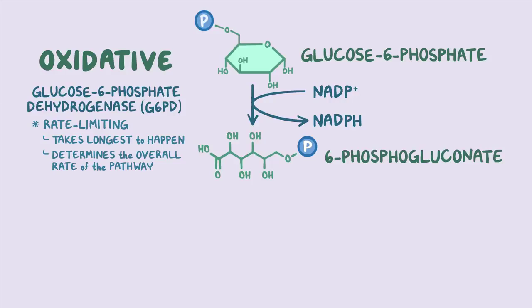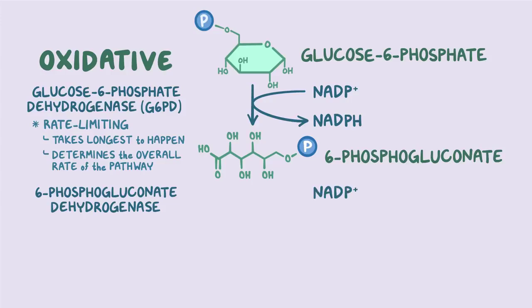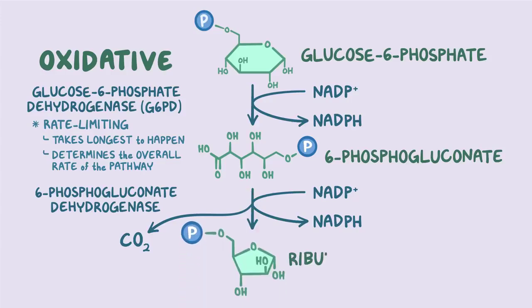The next step involves an enzyme called 6-phosphogluconate dehydrogenase, which, just like G6PD, steals an electron from 6-phosphogluconate and offers it to another NADP+, making our second NADPH. Unlike G6PD, this enzyme also removes a carbon from the 6-carbon 6-phosphogluconate and releases it as carbon dioxide, making a 5-carbon sugar called ribulose-5-phosphate. This marks the end of the oxidative phase, with a total of 2 NADPH molecules created per glucose.